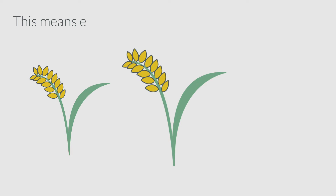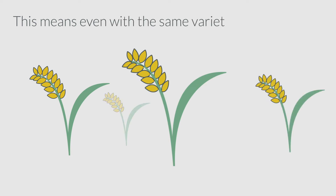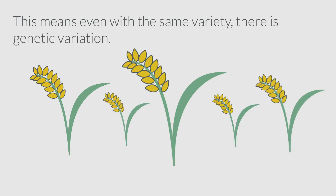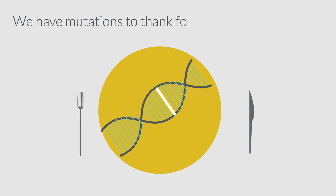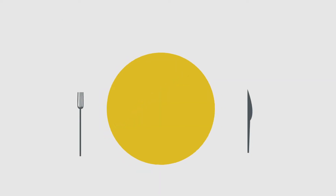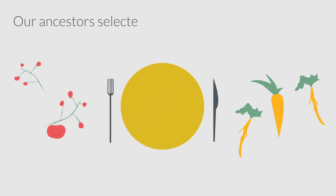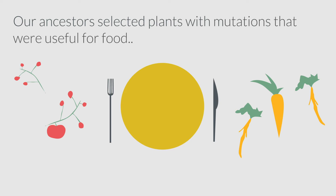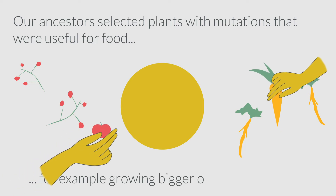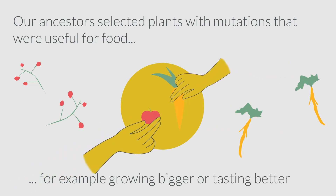This means even with the same variety, there is genetic variation. We have mutations to thank for the plants we eat. Our ancestors selected plants with mutations that were useful for food, for example, growing bigger or tasting better.